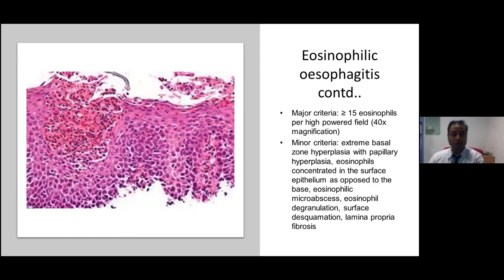There are major and minor criteria to diagnose eosinophilic esophagitis. The major criterion is seeing more than or equal to 15 eosinophils per high power field from the most densely populated eosinophilic area in the squamous mucosa. Minor criteria include extreme basal zone hyperplasia with papillary hyperplasia, eosinophils concentrated on the surface, micro-abscesses or eosinophilic degranulation, surface desquamation, lamina propria fibrosis, and a characteristic eosinophilic abscess pattern as seen in the picture.